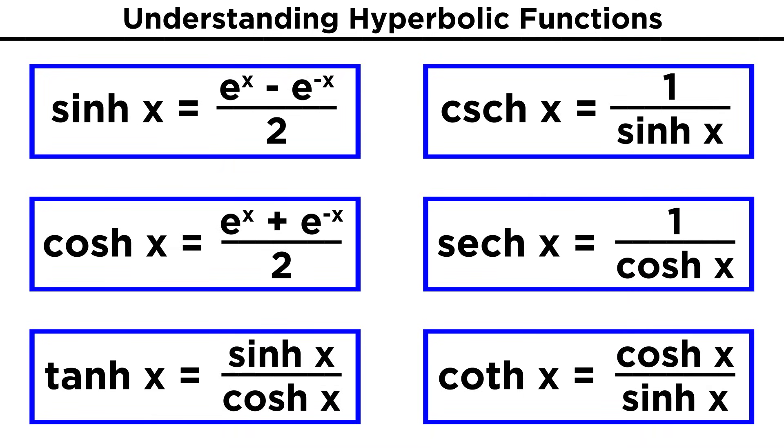And then we can have hyperbolic versions of cosecant, secant, and cotangent, which are just the reciprocals of these first three, as we might expect from our knowledge of trigonometric functions.